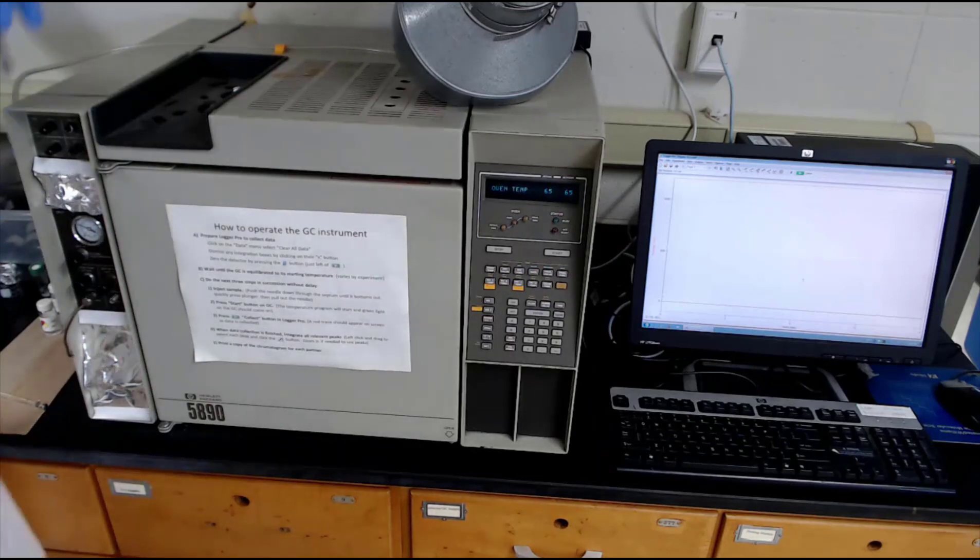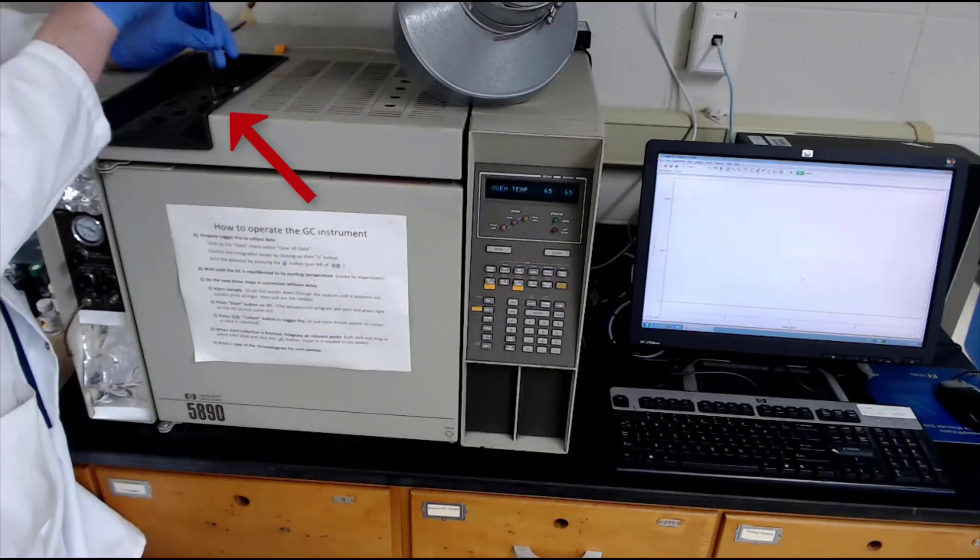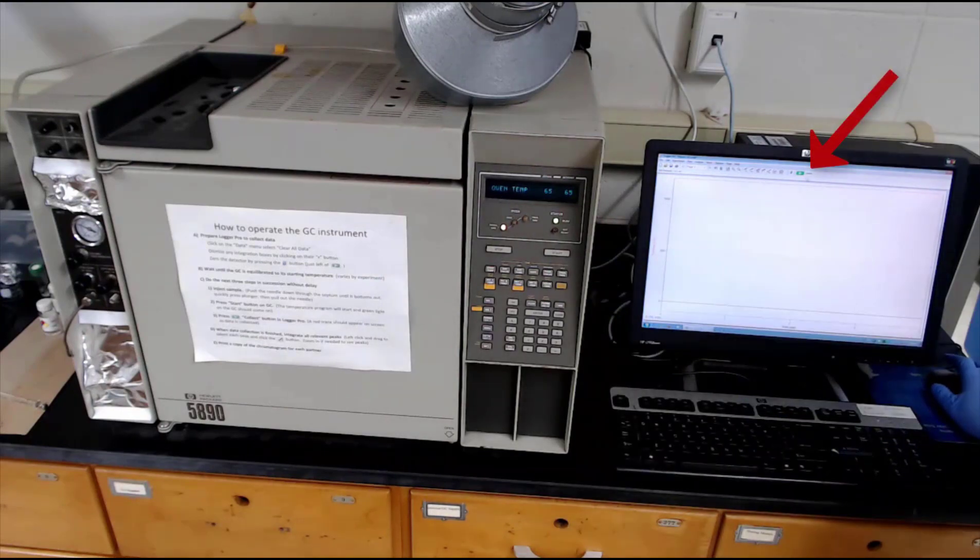The injector port on the GC is on the top of the instrument. Push the needle of the syringe until it bottoms out, then press the plunger down to inject the sample. Press Start on the GC instrument, and then press Start on the computer on Logger Pro to get the data station collecting data.